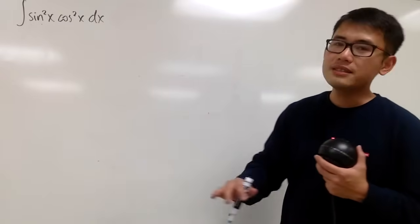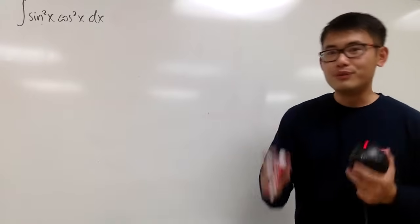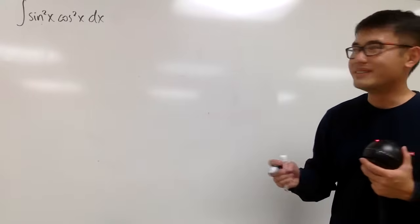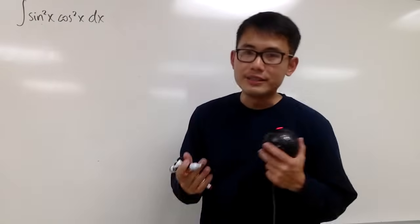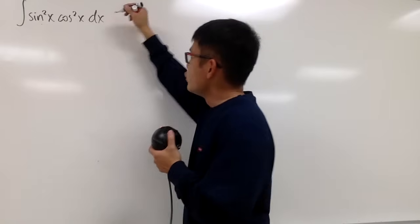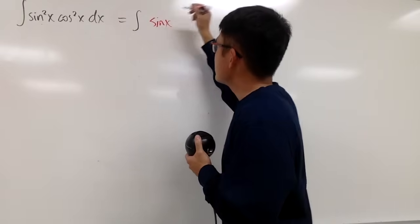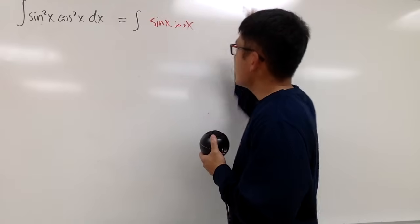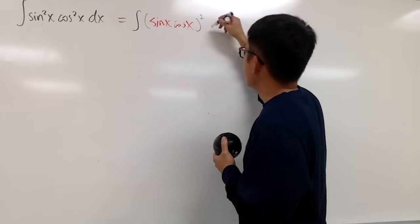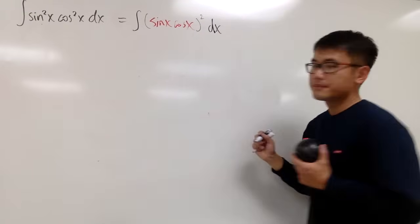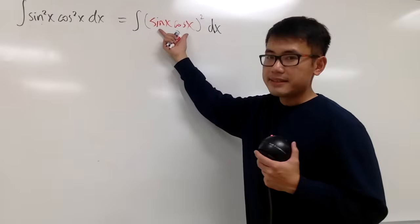And you can try the other techniques, such as integration by parts or whatsoever. And I'm going to leave those things to you, because let me show you guys the following way. First of all, I noticed that both of them are to the second power. So let's rewrite this integral as the integral of, let's put down sine x and then times cosine x. And then let's take both of that to the second power right here. And, of course, we have to have the dx.